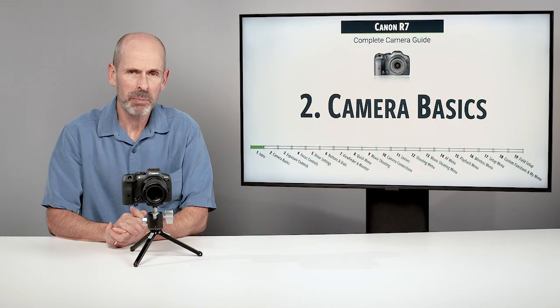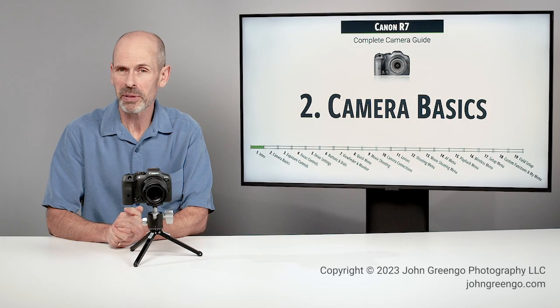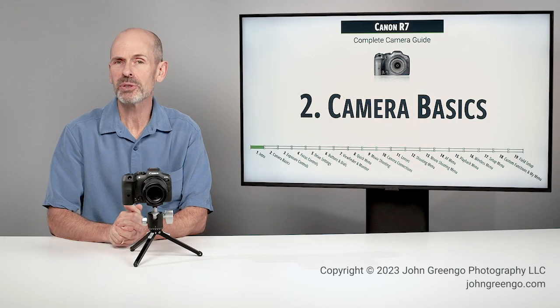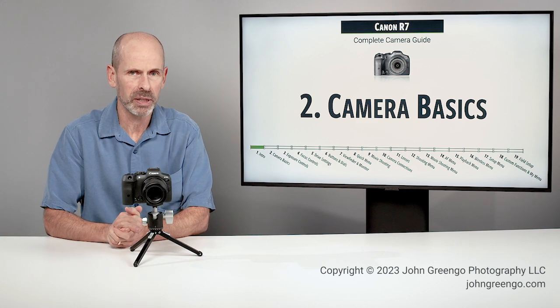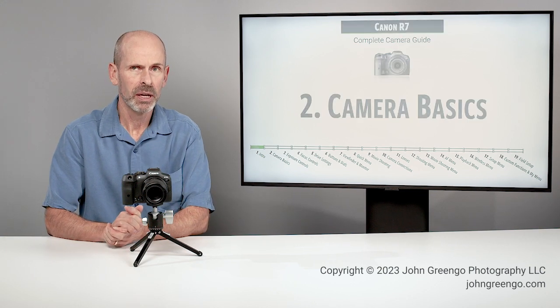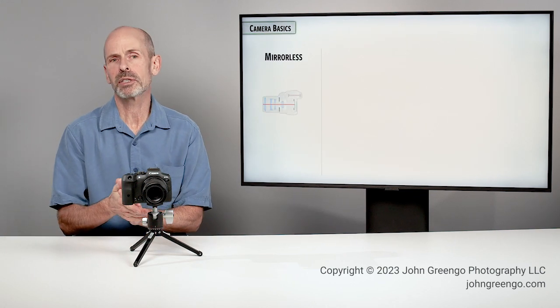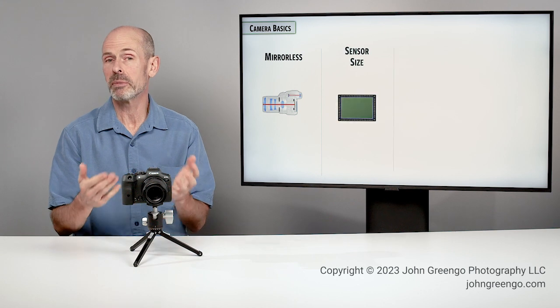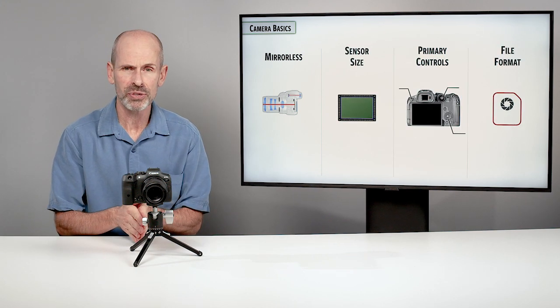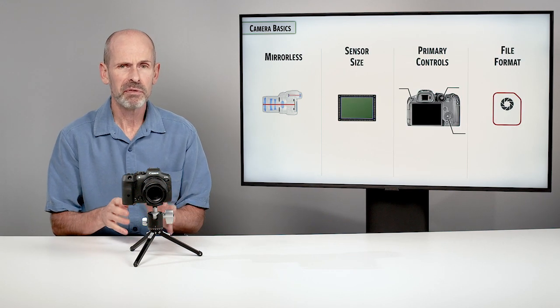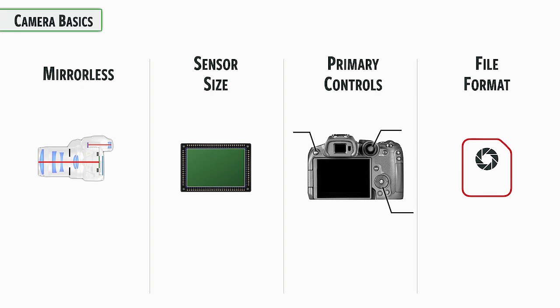In camera basics we are going to cover some simple but important things. We're going to look at what a mirrorless camera is, talk about the sensor size, a few of the primary controls, and we're going to get one setting set right away — the file format, one of the most important settings in the camera.